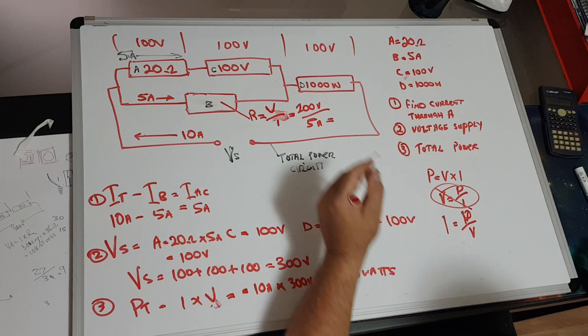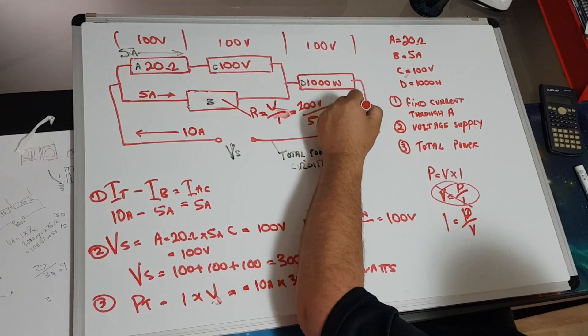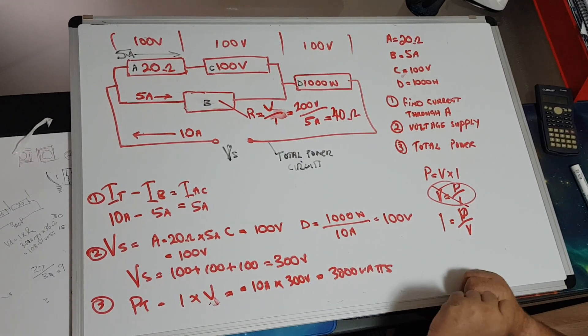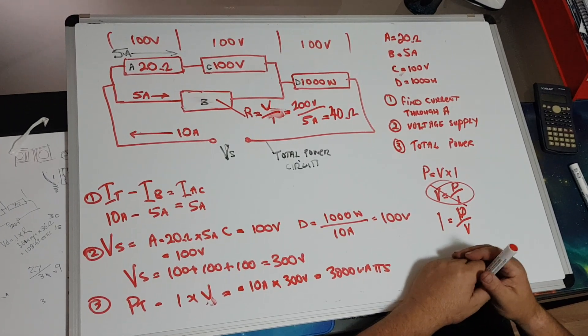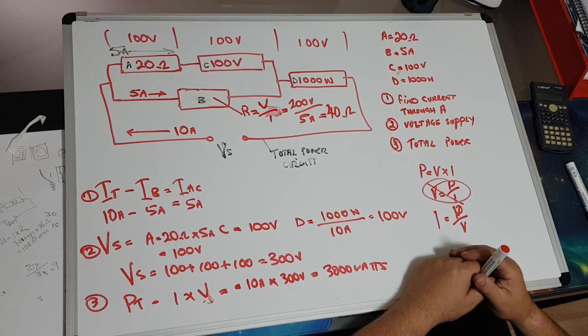That will give us our resistance, which is 40 ohms. So there's all different ways of doing things, but like I said, it's all numbers and formulas. All you got to do is apply them the right way.